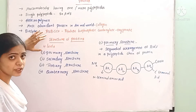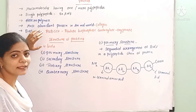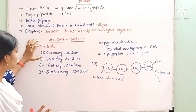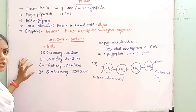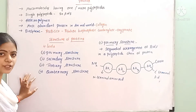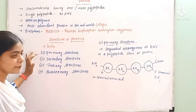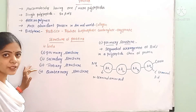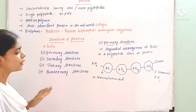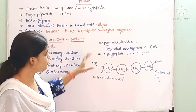If you see the structure of the protein, it can be studied in four levels: primary structure, secondary structure, tertiary structure, and quaternary structure. In these four levels, the structure of proteins can be studied.